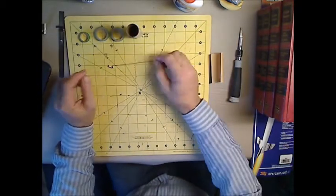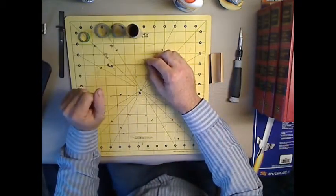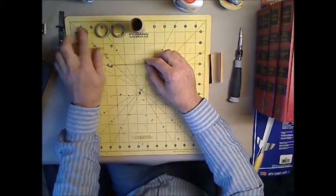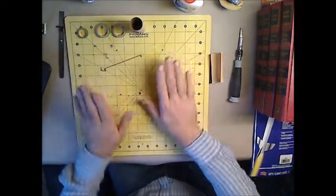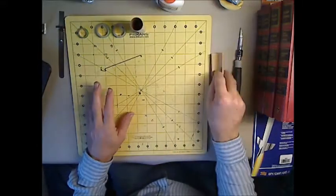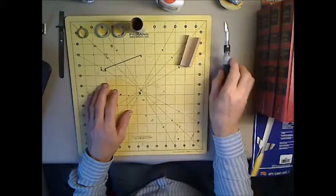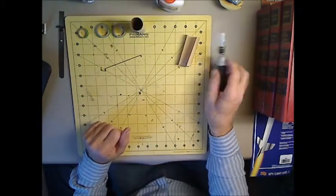All right, so we got the materials we need: our engine mount tube rings, engine block, engine hook. We're also going to need our white glue or wood glue, some sandpaper, and our scalpel or exacto knife.